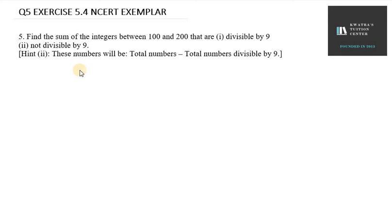Hello everyone, let's start with question number 5. In this it says find the sum of the integers between 100 and 200 that are divisible by 9, and second is not divisible by 9. So in the first part we have to take divisible by 9.